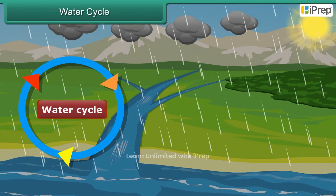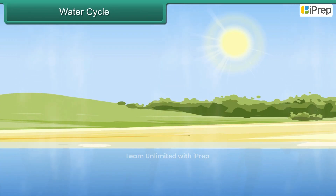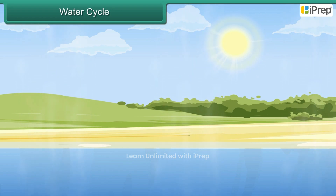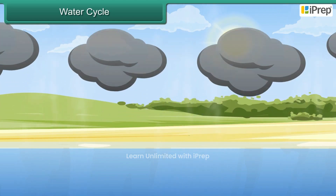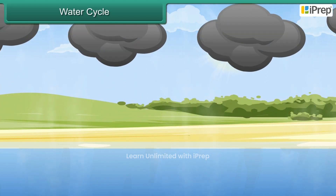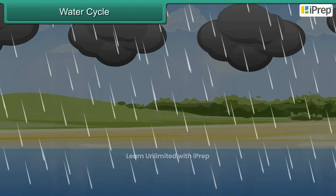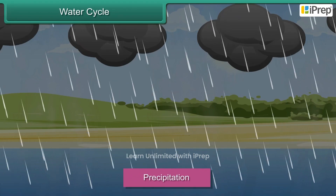Water from the seas and oceans is heated by the sun's rays, which causes it to change into a gas and rise into the air — this is called evaporation. Once high up in the sky, the gas begins to cool and turns back into a liquid — this process is called condensation. The water droplets form clouds, which become heavy and fall from the sky in the form of rain — this is called precipitation. This cycle never stops.